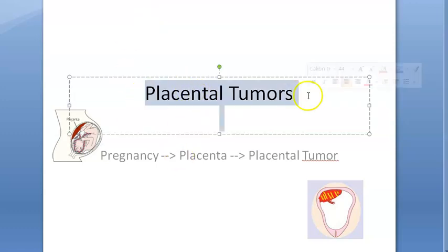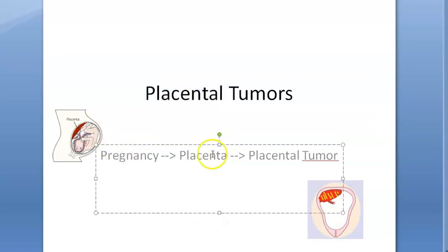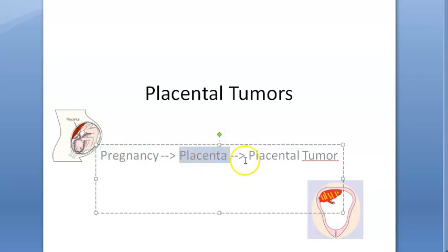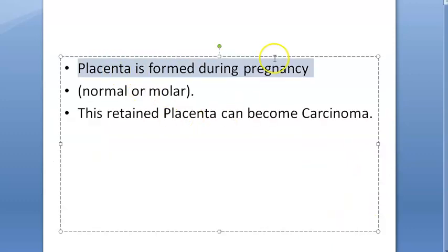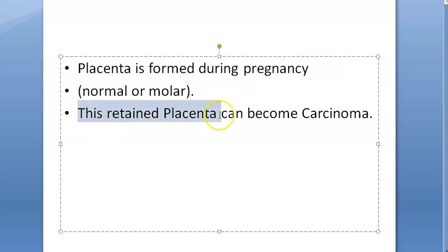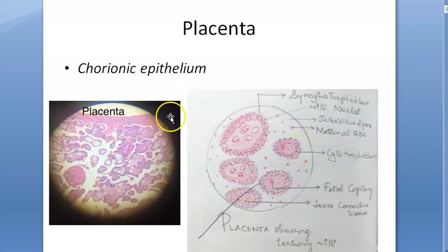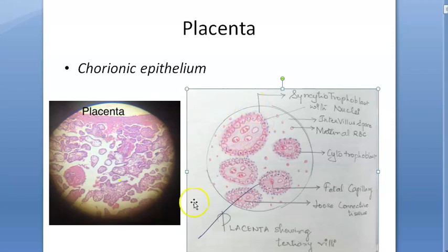In this video, let us look at placental tumors or placental diseases. Basically, a placenta forms during pregnancy — a normal pregnancy or a molar pregnancy. If this placenta is retained, it can become a placental tumor or carcinoma. This is how a normal placenta looks — you can see the villous structure.